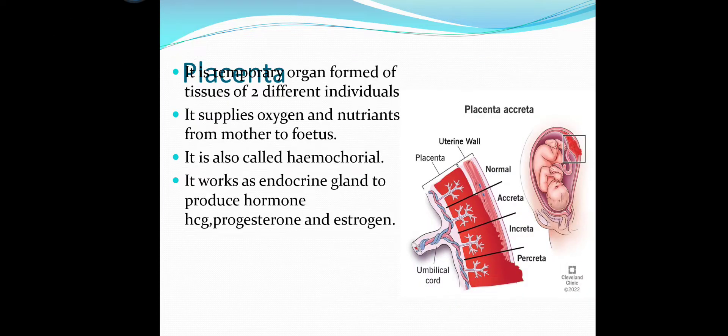Placenta is a temporary organ formed of tissues of two different individuals — mother and fetus. It supplies oxygen and nutrients from mother to fetus. It works as an endocrine gland to produce hormones like human chorionic gonadotrophin, progesterone, and estrogen. The placenta covers the baby, providing nourishment, and the umbilical cord connects the baby to the mother.